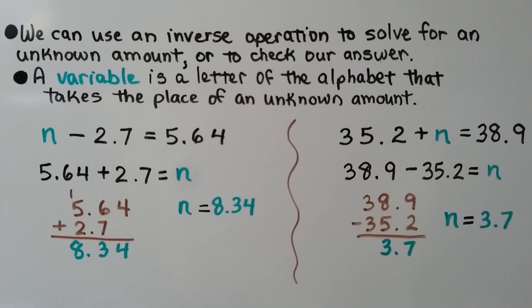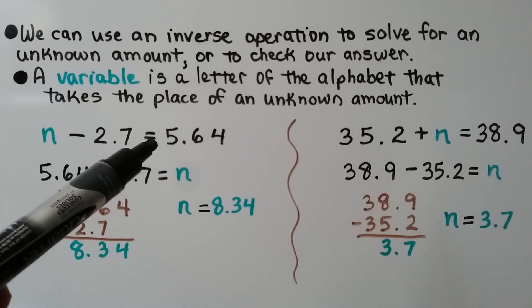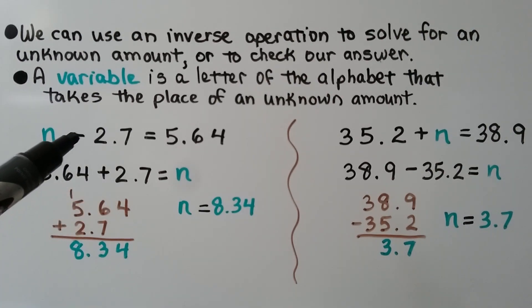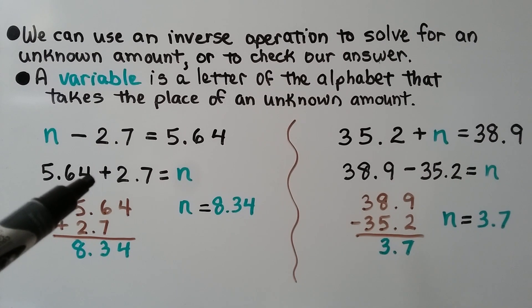We can use an inverse operation to solve for an unknown amount or to check our answer. A variable is a letter of the alphabet that takes the place of an unknown amount. And here we have one. We have a variable n. And it says n minus 2.7 is equal to 5.64.